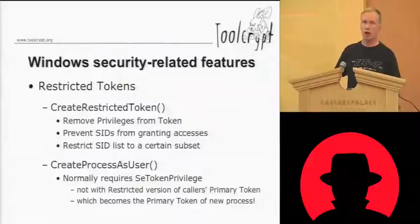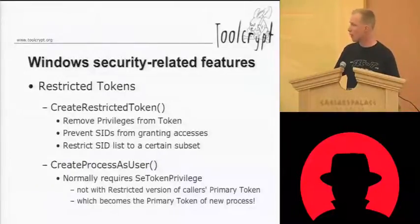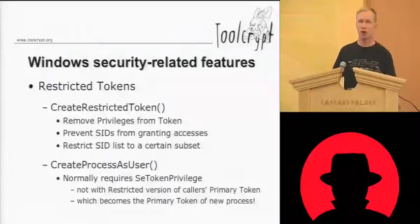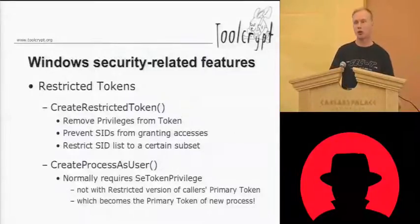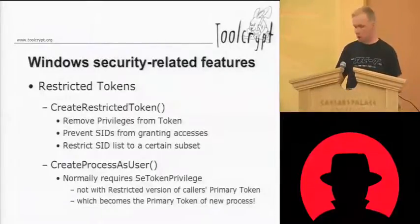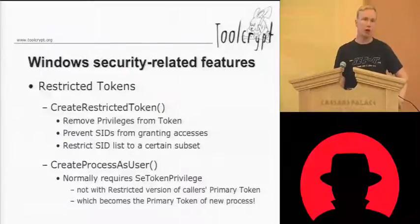That's actually controlled by a system privilege. If you don't have the SE token privilege, you can't assign a new primary token to a new process or any process. But CreateProcessAsUser called with a restricted token will allow you to start a new process with an arbitrary token, as long as it's a restricted token derived from the primary token of the calling process. This is a nice way to spawn a new process from your application that's dropped all the privileges the user might have had.